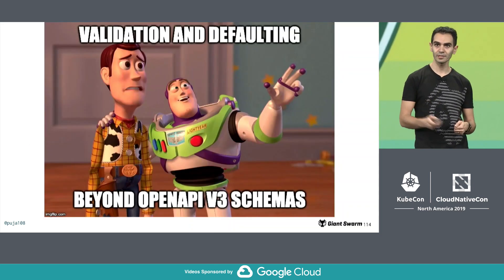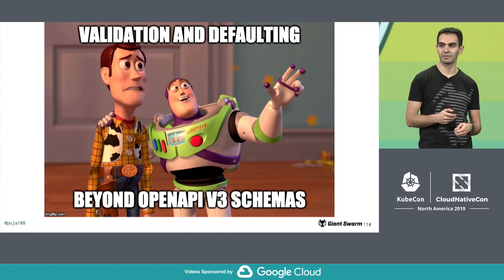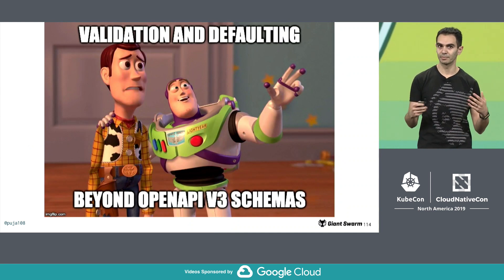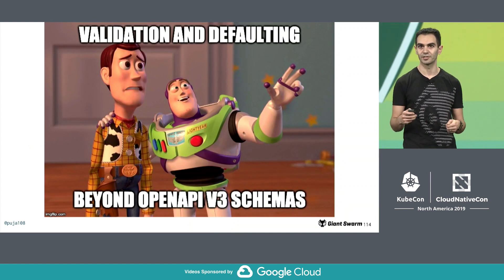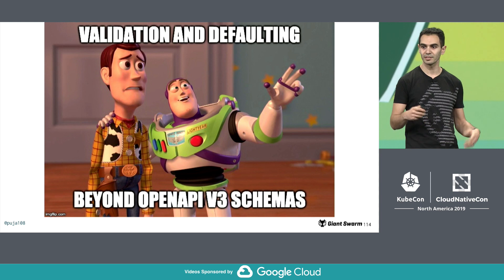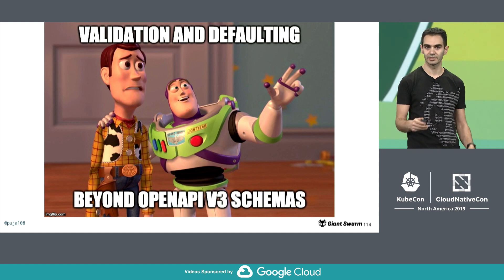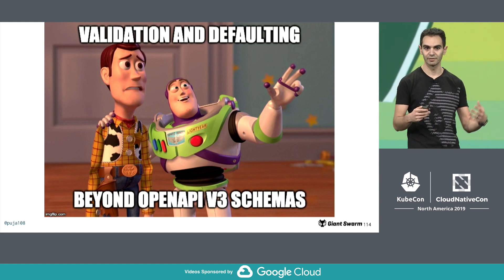There is OpenAPI v3 schemas, and you can do some declarative defaulting and validation there. But there are some use cases that go beyond that, especially if you work with a lot of CRDs.